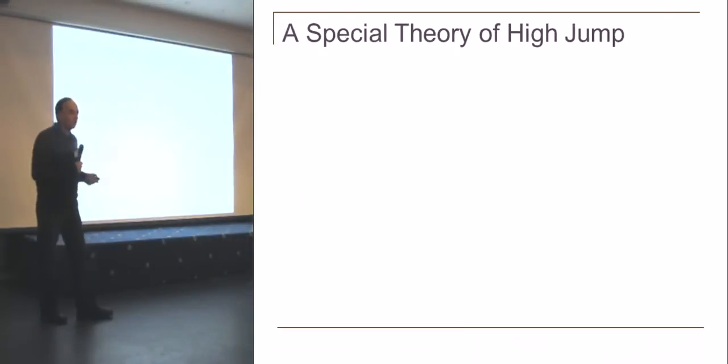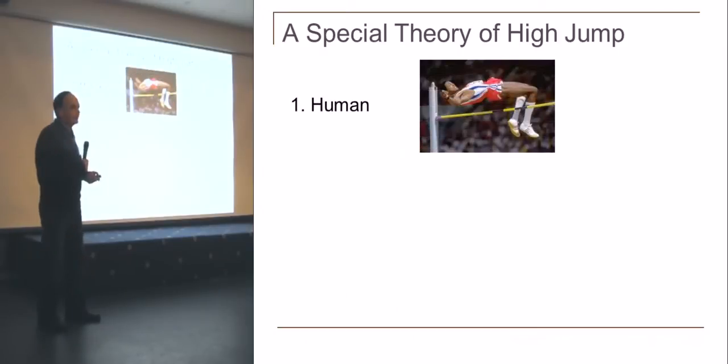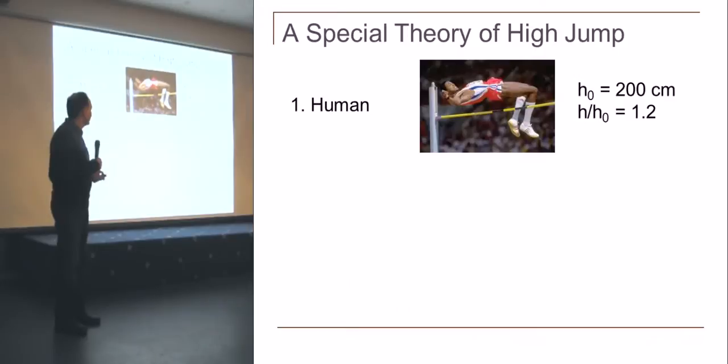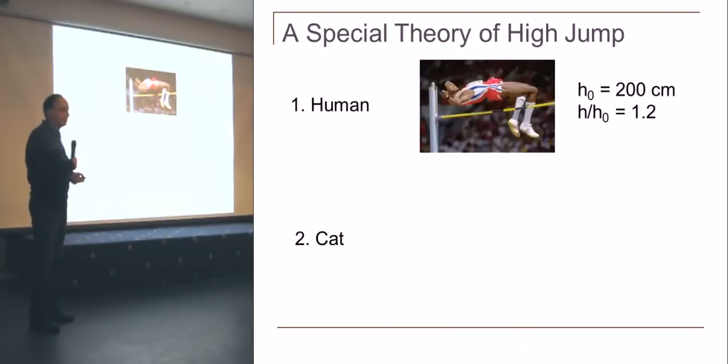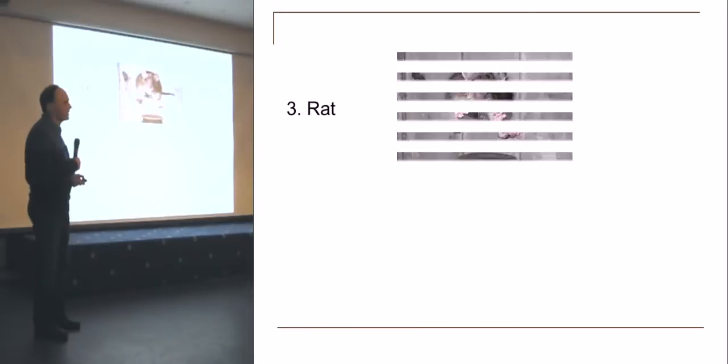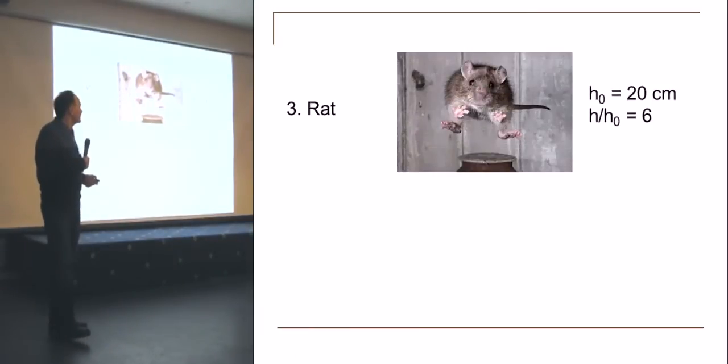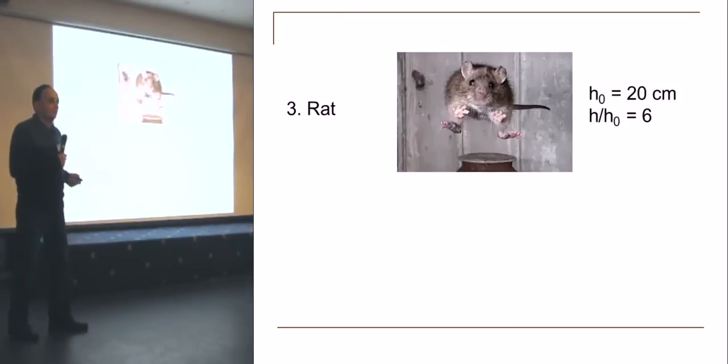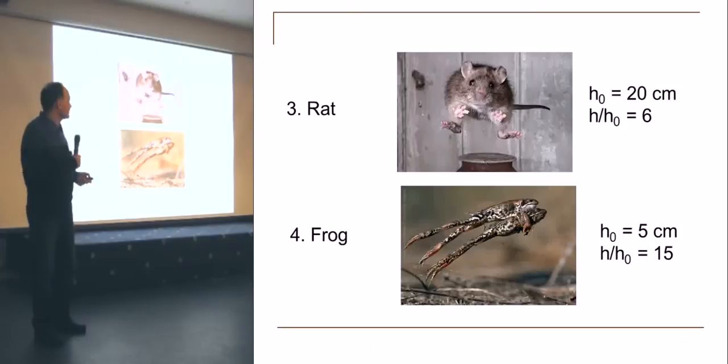And now, 40 years later, we come with a special theory of high jumps. Let's take a human who is at top level in high jumps. Being about 2 meters tall, he jumps about a factor of 1.2 above his head. Let's take smaller animals. A cat, being about 40 centimeters body length, jumps 5 times higher than the body length. A rat, being 20 centimeters long, jumps 6 times higher than its length. A frog, 5 centimeters, the ratio is 50.